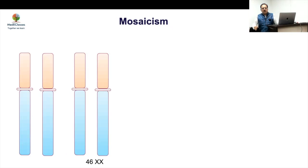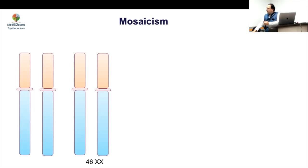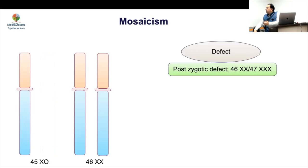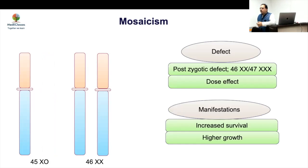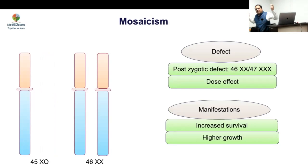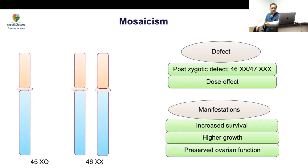Mosaicism results from a post-zygotic error, so some cells will have classic X0 and some will have a normal X chromosome. This is a dose effect — the number and distribution of mosaicism determines how the girl will manifest. Mosaic forms will generally have a milder presentation. If 50% mosaicism is present, you effectively have 1.5 doses of SHOX, which brings the growth plate closer to normal. The timing and tissue distribution of the mutation determines the degree of manifestation.